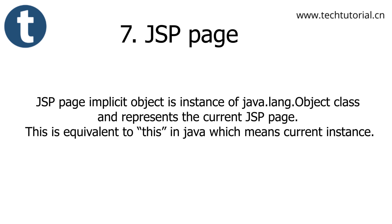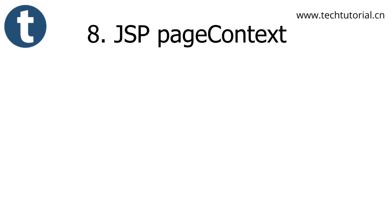The JSP page implicit object is an instance of the Java Object class and represents the current JSP page. It works as the equivalent of the 'this' keyword in Java.